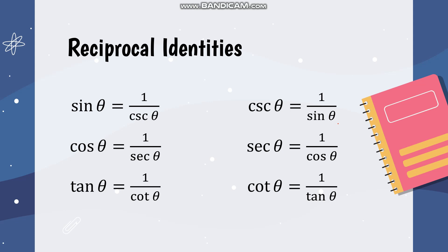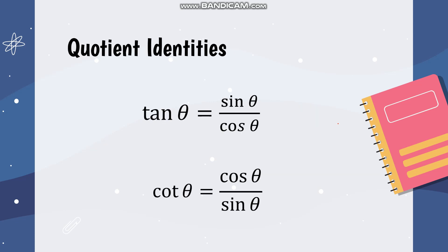There are different kinds of trigonometric identities. First are the reciprocal identities — we can identify different trigonometric functions by getting the reciprocal of another. Sine theta is the reciprocal of cosecant, or one over cosecant theta. Cosine theta is the reciprocal of secant, and tangent theta is the reciprocal of cotangent. We also have the quotient identities: tangent is obtained by dividing sine theta by cosine theta.